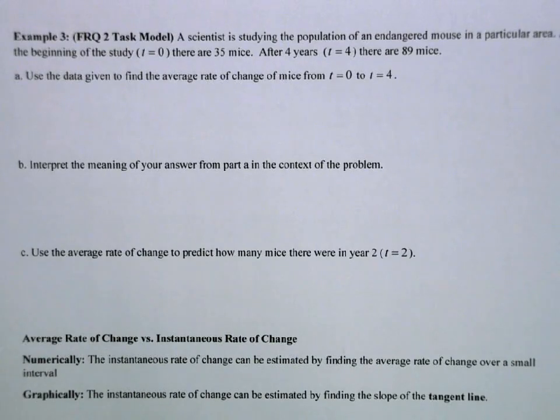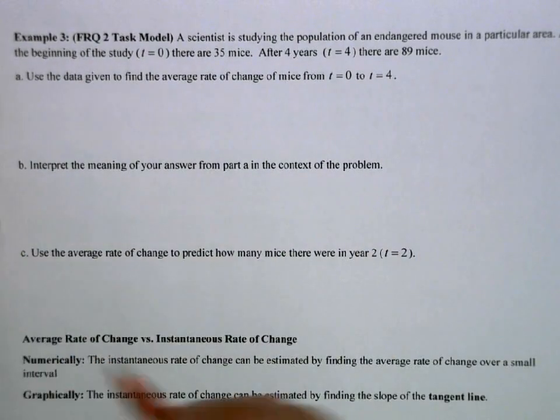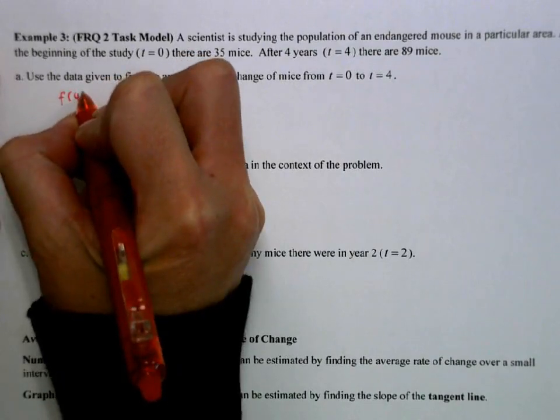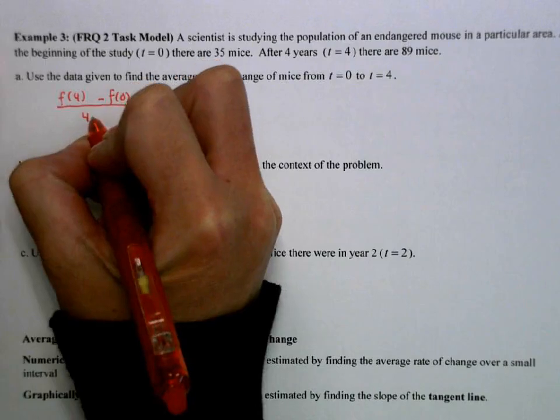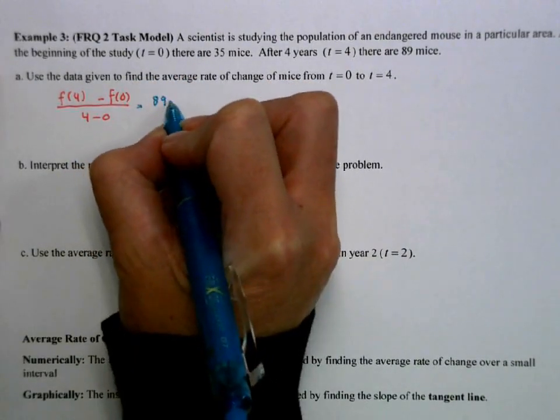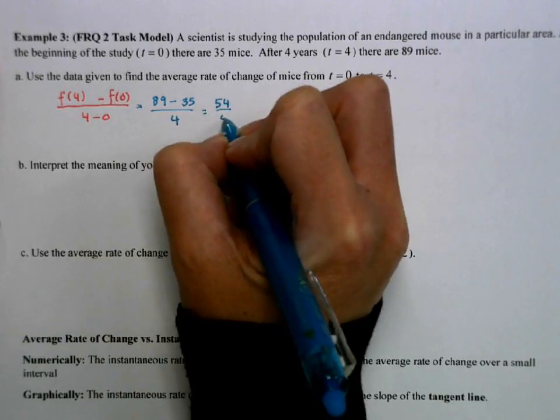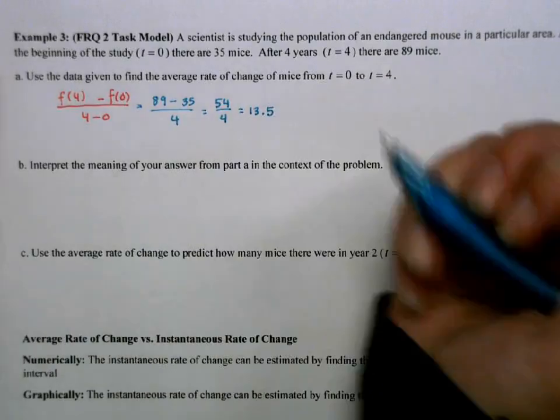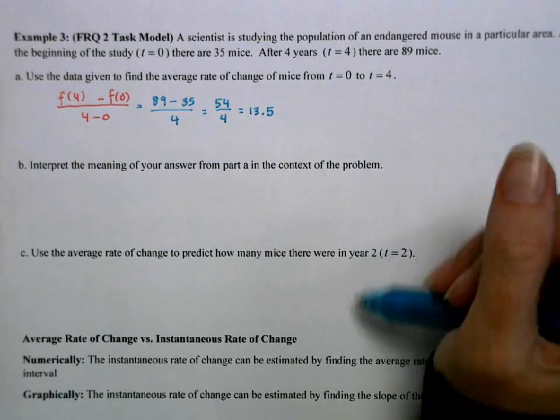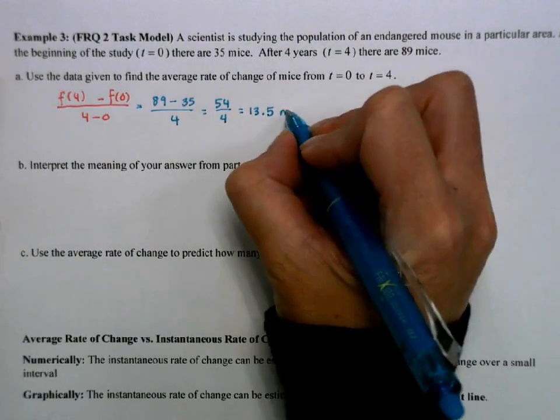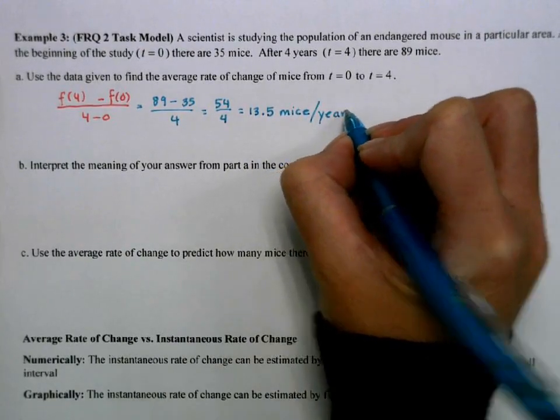A scientist is studying the population of an endangered mouse in a particular area. At the beginning of the study, t equals 0, there are 35 mice. At t equals 4, four years later, there are 89 mice. This will be something you will be asked to do on your AP exam: calculate the average rate of change on a given interval. So we're going to go f of 4 minus f of 0 over 4 minus 0. So we have 89 minus 35 over 4. This is a calculator active question, so you will typically be asked to write yours as decimals. Let's attach units. The units on the top were mice, the units on the bottom were years. So that's 13.5 mice per year.